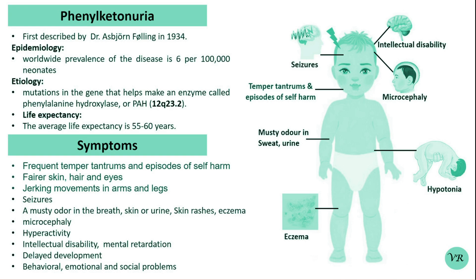PKU is caused by mutations in the Phenylalanine hydroxylase gene, which encodes the enzyme Phenylalanine hydroxylase. This enzyme is responsible for converting Phenylalanine into tyrosine; without this enzyme, Phenylalanine accumulates and leads to toxic effects.